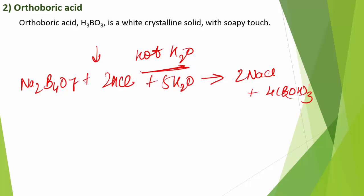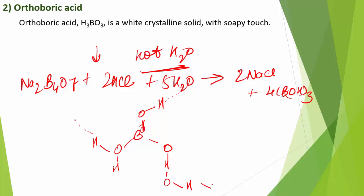Orthoboric acid is also formed by hydrolysis of most boron compounds such as halides and hydrides. Its structure is a layer structure in which planar BO₃ units are joined by hydrogen bonds, forming an extended planar network.